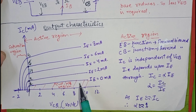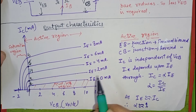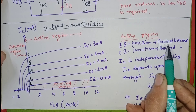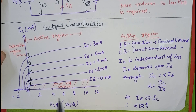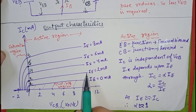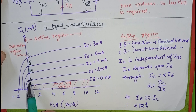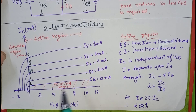Now we will analyze the output characteristics using this graph. From this curve to this curve, this is the active region. In the active region, the emitter base junction is forward biased and the collector base junction is reversed biased. We can see here when we increase the voltage, there is no change in IC — it is almost constant. For IE equals to 2 mA, IC is also almost equal to 2 mA. So IC depends upon IE and does not depend upon VCB.